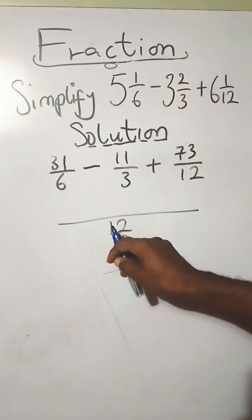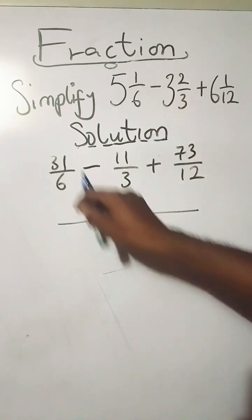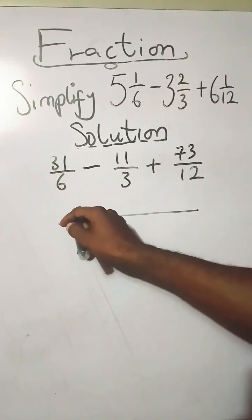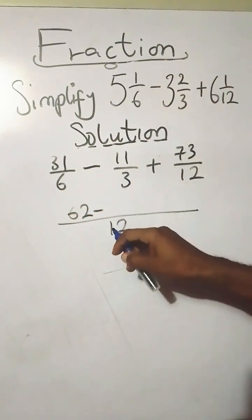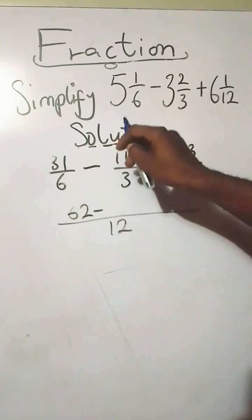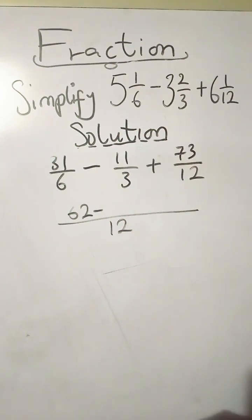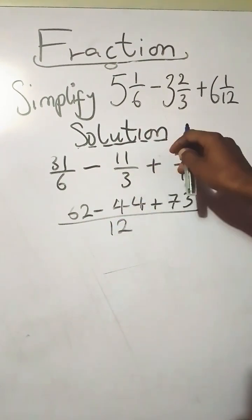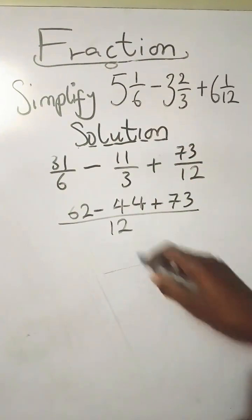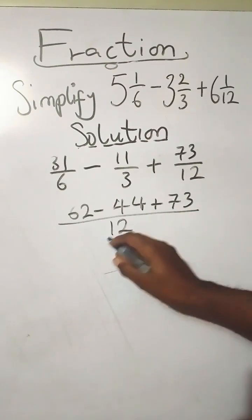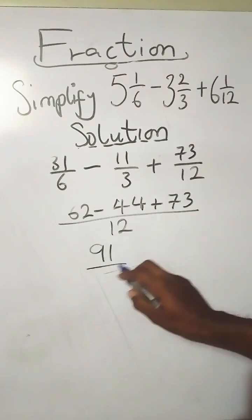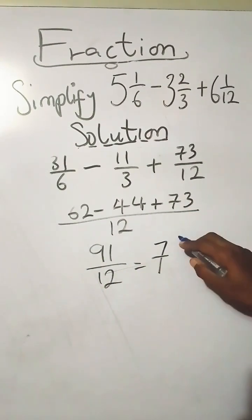3 goes into 12 four times, and 4 times 11 you have 44. 12 goes into 12 once, and 1 times 73. Now 62 minus 44 plus 73 gives you 91 over 12, and that leaves you with 7 whole number, 7 over 12.